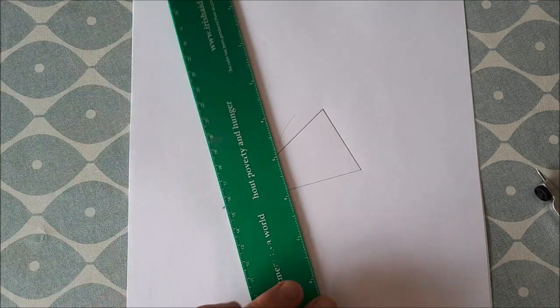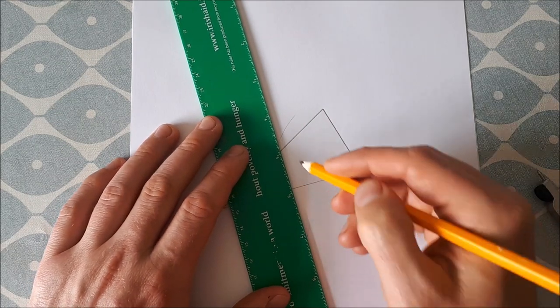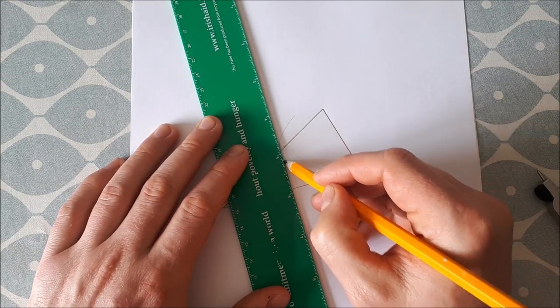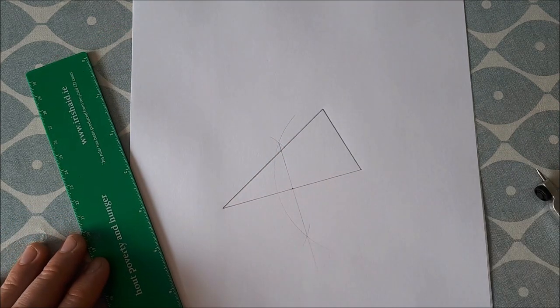Where these two points of intersection join up, we join the two points of intersection like this. This will give us our bisector of the line.